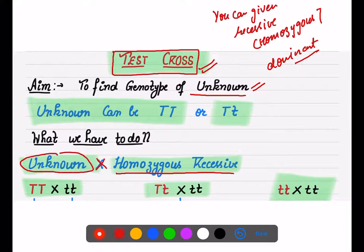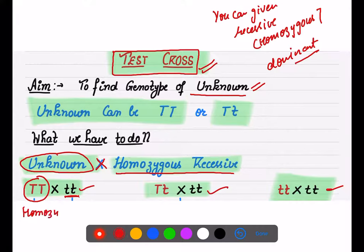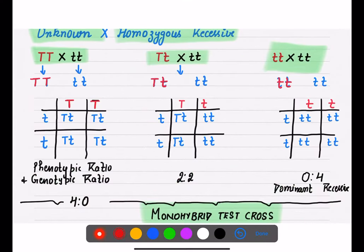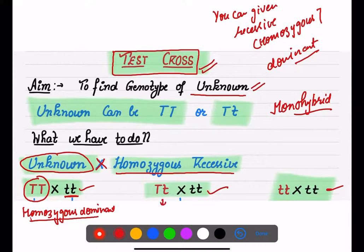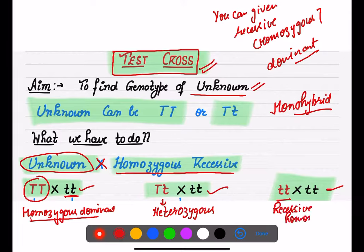In a monohybrid test cross, there can be three conditions for the unknown genotype: it can be completely homozygous dominant, it can be heterozygous, or it can be homozygous recessive. These are the three conditions we need to analyze by crossing with the homozygous recessive.